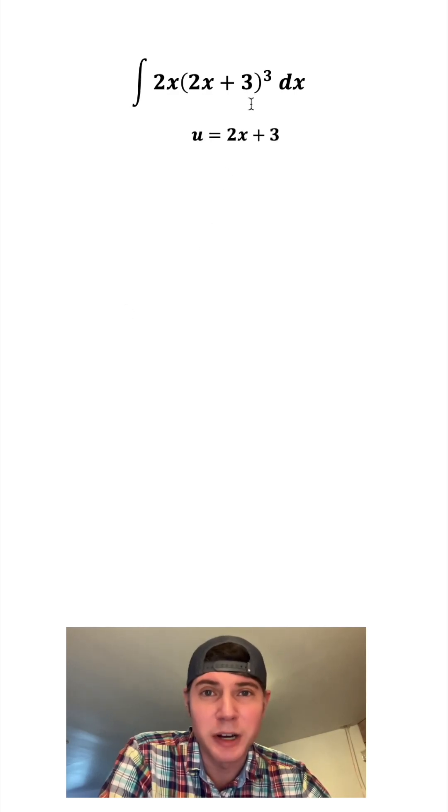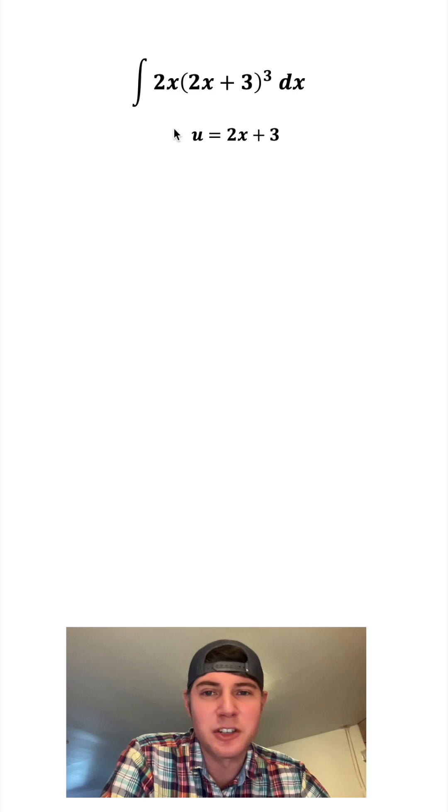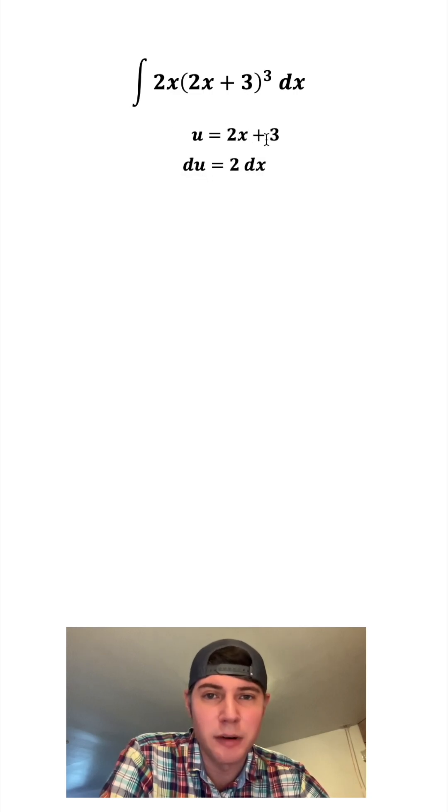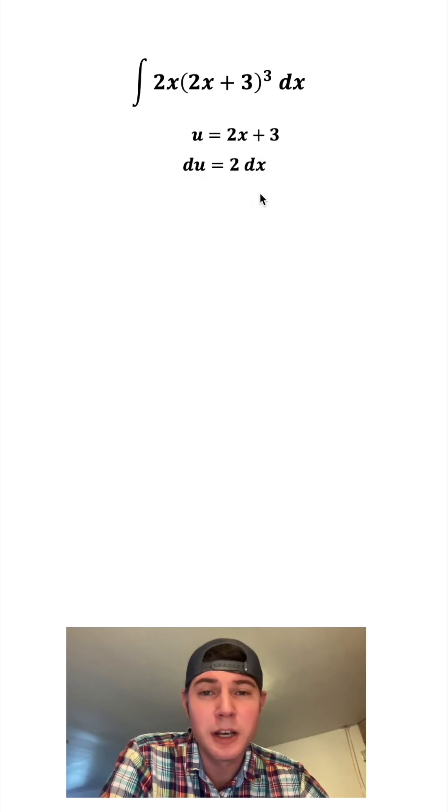So we can set u equal to the 2x plus 3. If we take the derivative of both sides, we'll get du equals and the derivative of 2x plus 3 is 2, and then we have the dx.